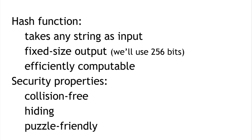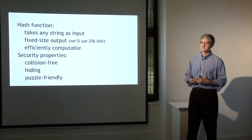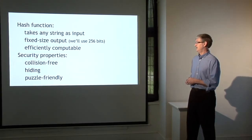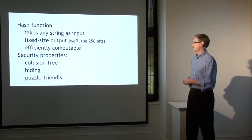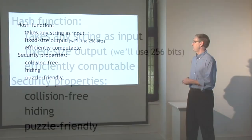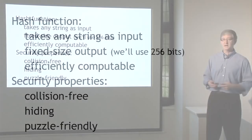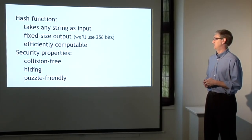We're going to need hash functions that are cryptographically secure. The cryptographic properties of hash functions are a complicated topic in general, but we're going to focus on three particular properties: that the function is collision-free, that it has a hiding property, and that it's puzzle-friendly. For each of these, I'll talk about what the property is, what it means, and why it's useful to have a function with that property.